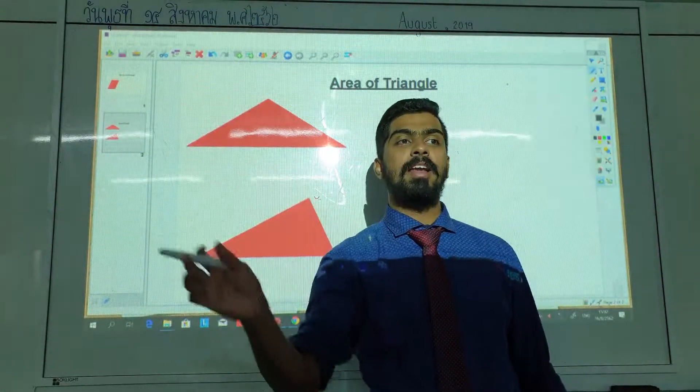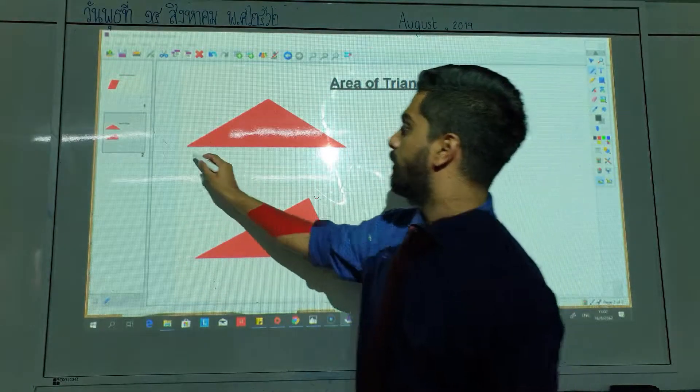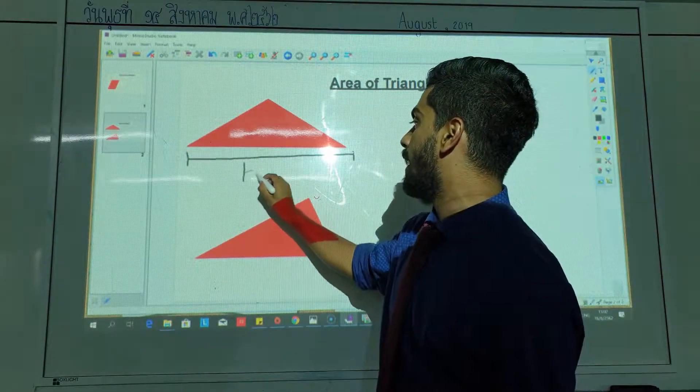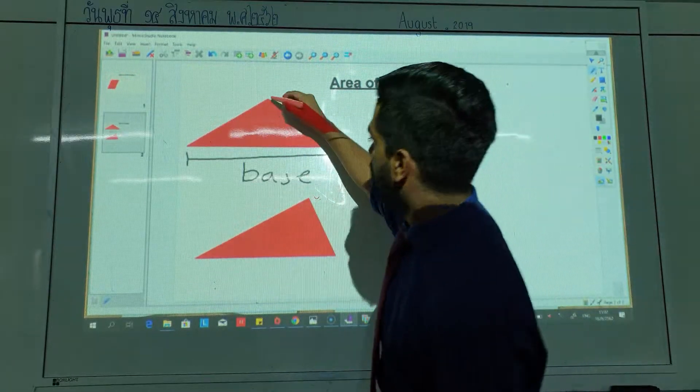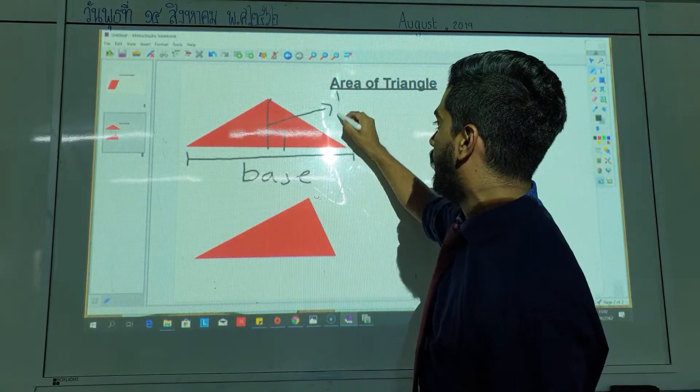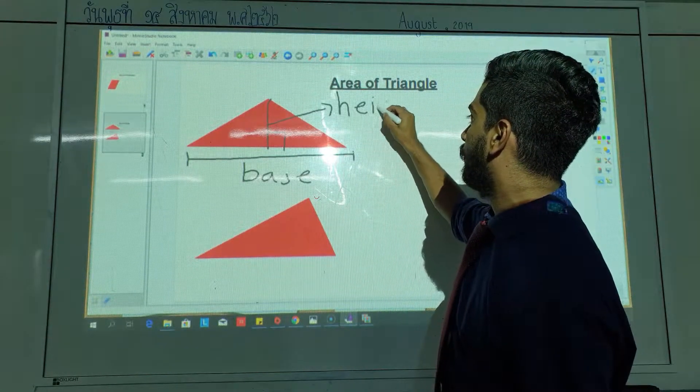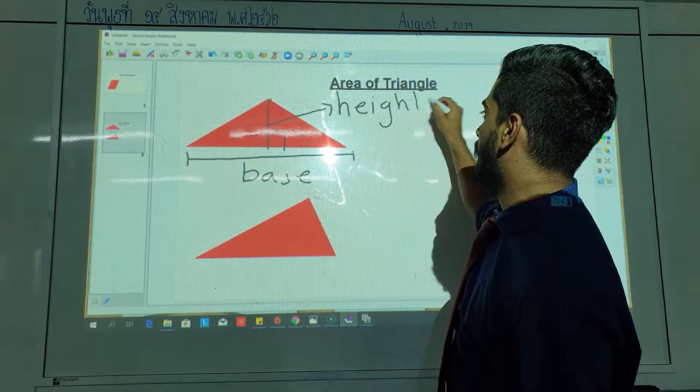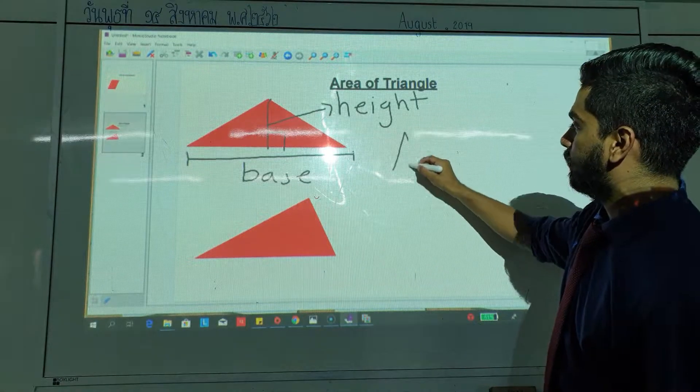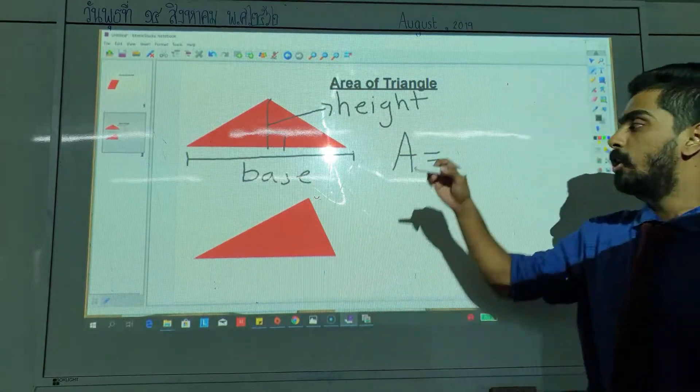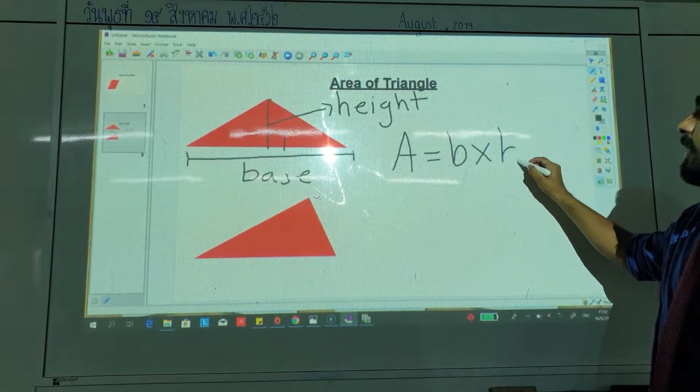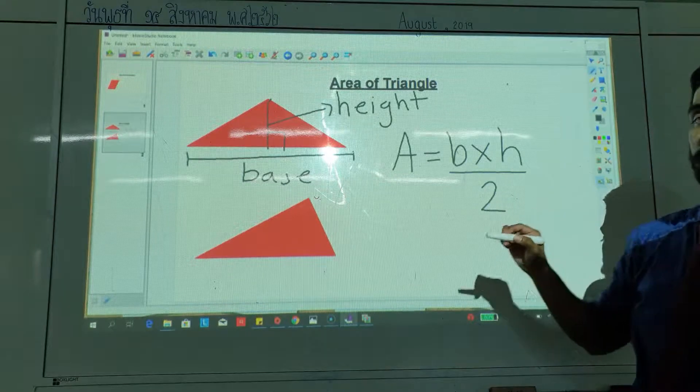When we find the area of a triangle, we have a base. So this is the base. And we have the height. This one is our height. Now, the formula to find the area of a triangle is A equals base multiplied by height divided by 2.